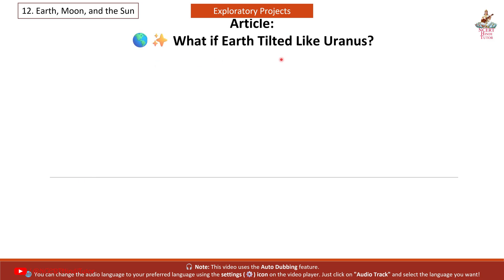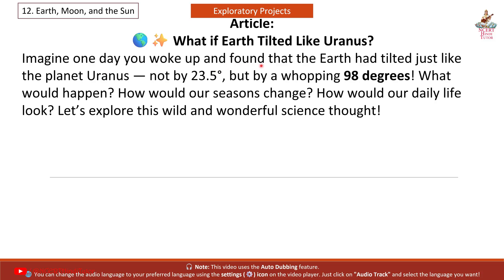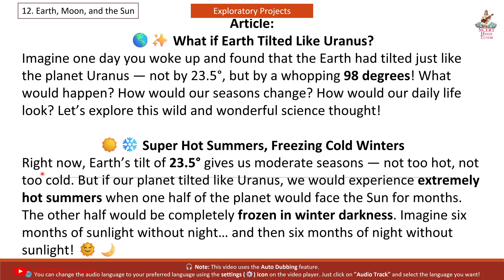Article: What if Earth tilted like Uranus? Imagine one day you woke up and found that the Earth had tilted just like the planet Uranus — not by 23.5 degrees, but by a whopping 98 degrees. What would happen? How would our seasons change? How would our daily life look? Super hot summers and freezing cold winters. Right now, Earth's tilt of 23.5 degrees gives us moderate seasons — not too hot, not too cold. But if our planet tilted like Uranus, we would experience extremely hot summers. When one half of the planet would face the Sun for months, the other half would be completely frozen in winter darkness. Imagine 6 months of sunlight without night, and then 6 months of night without sunlight.